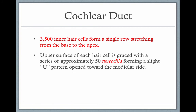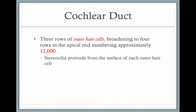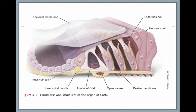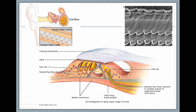There are 3,500 inner hair cells forming a single row, stretching from the base of the cochlea up to the apex. The upper surface of each hair cell is graced with approximately 50 stereocilia — those are the tips. There are 3 rows of outer hair cells, approximately 12,000, and the stereocilia protrude from the top surfaces of the outer hair cells as well. Here you can see the outer hair cells in 3 rows and 1 row of inner hair cells resting on the basilar membrane, overlaid by the tectorial membrane. Here is a picture of healthy outer hair cells on the right and inner hair cells at the top.